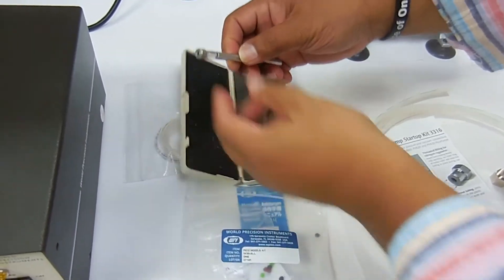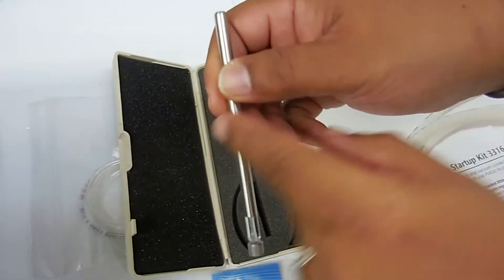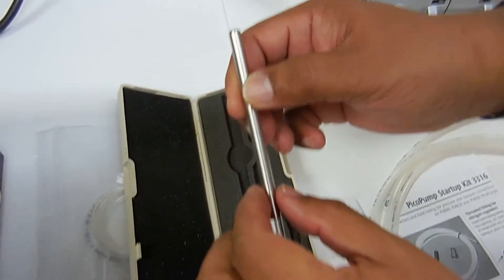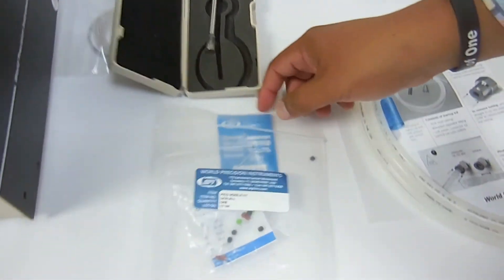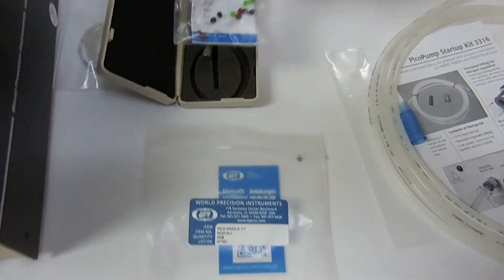It's actually called the pico nozzle kit to hold your pipette. It includes the acrylic body and a bar, 8.4 millimeter bar, so you can put it on your manipulator. You also have a set of gaskets.